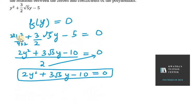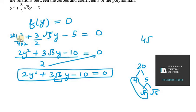Now we need to split the middle term. We have 10 and 2, so 10 × 2 = 20. We need to split 20 as 4 × 5, and since we have √5, we split 5 as √5 × √5. So we can write it as 4√5 and -√5, giving 4√5 - √5 = 3√5.